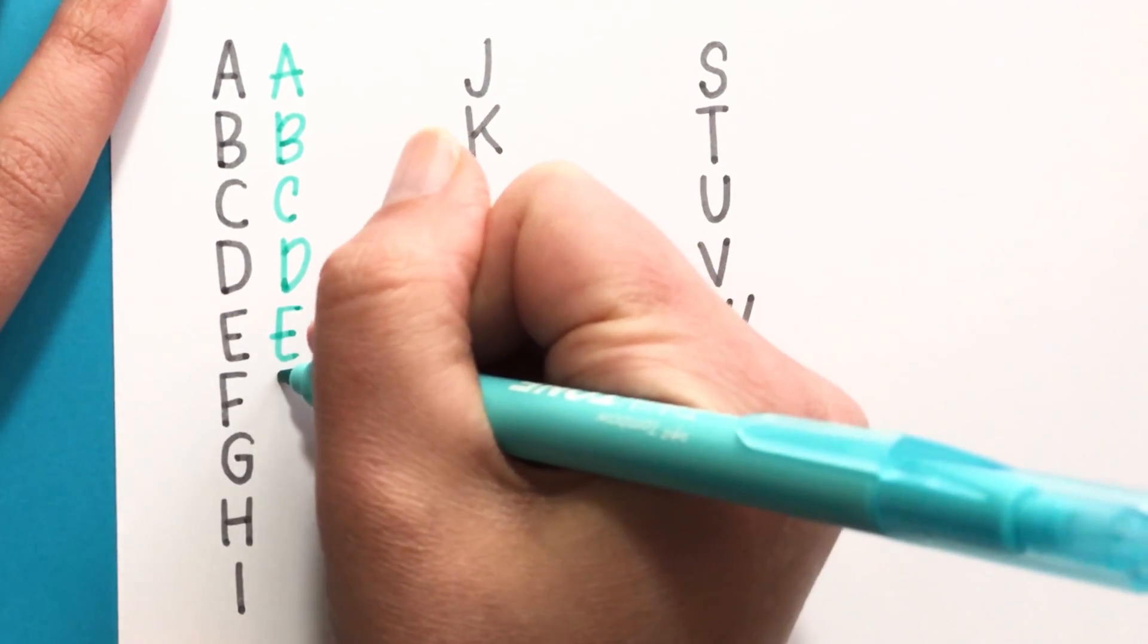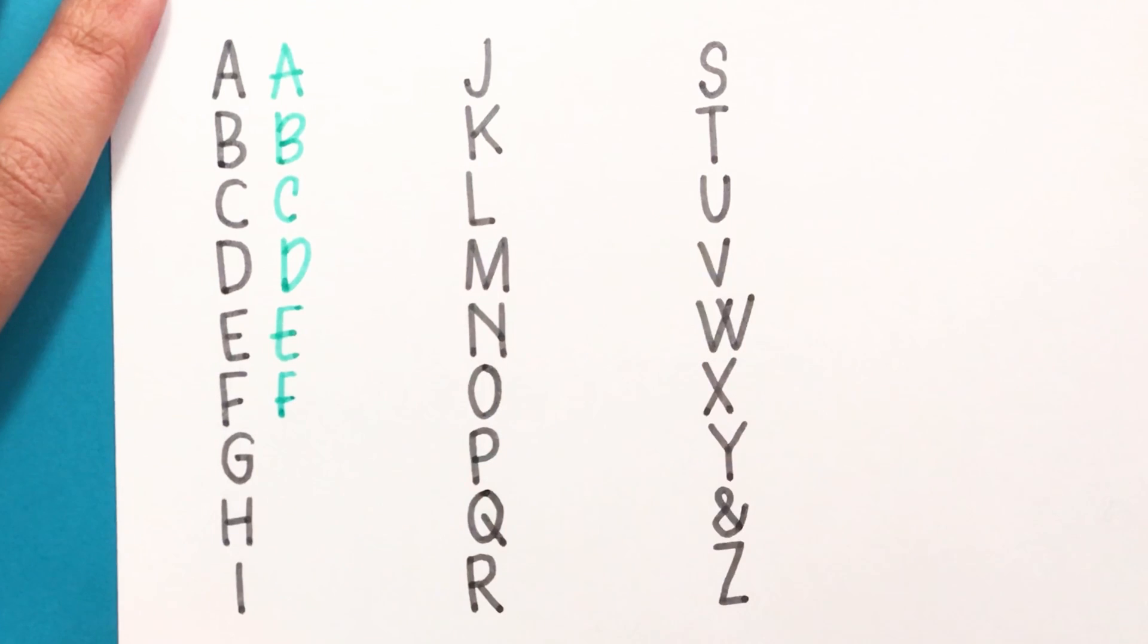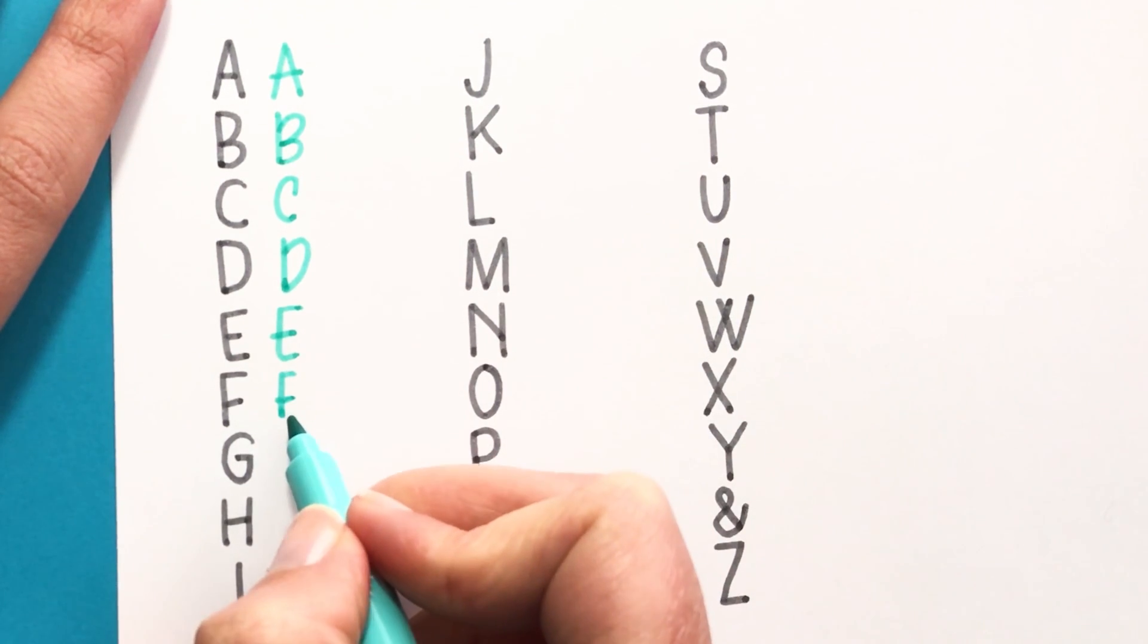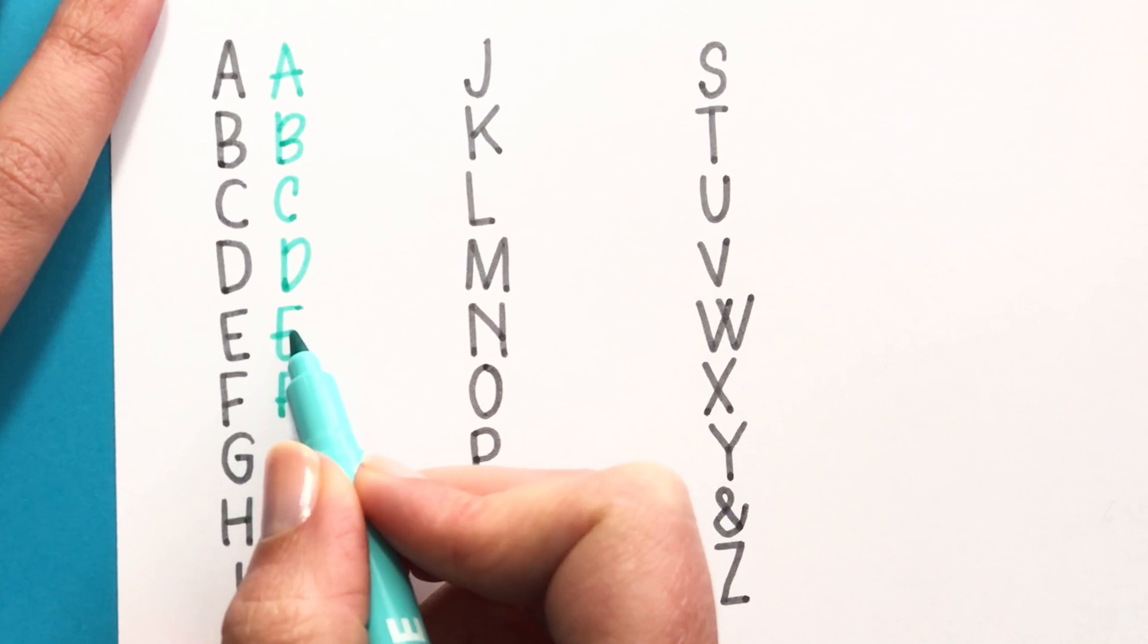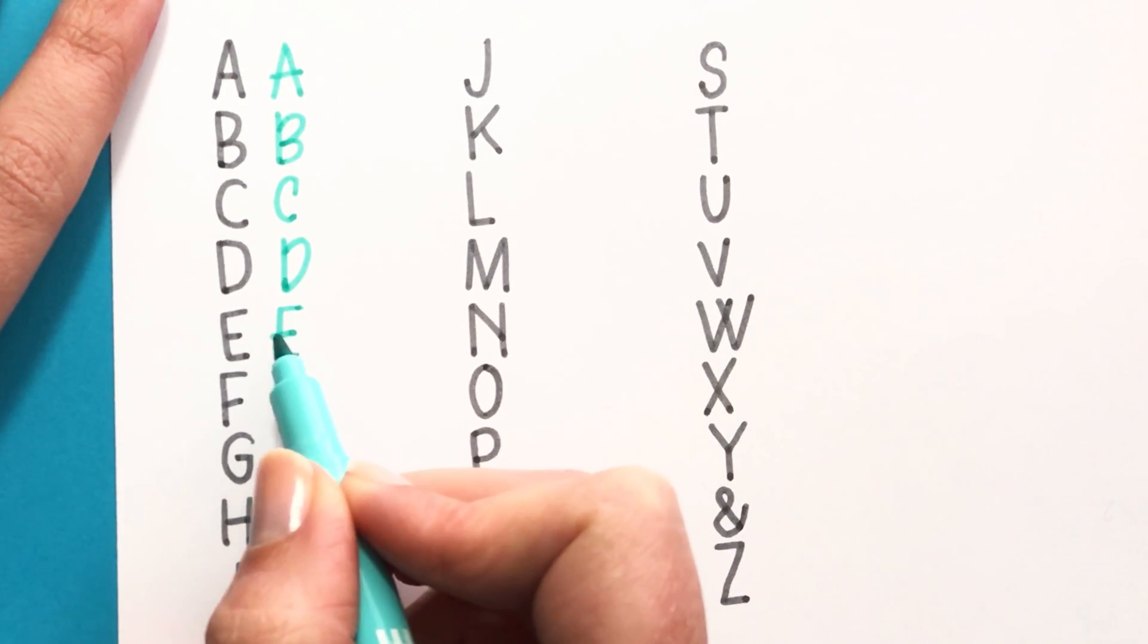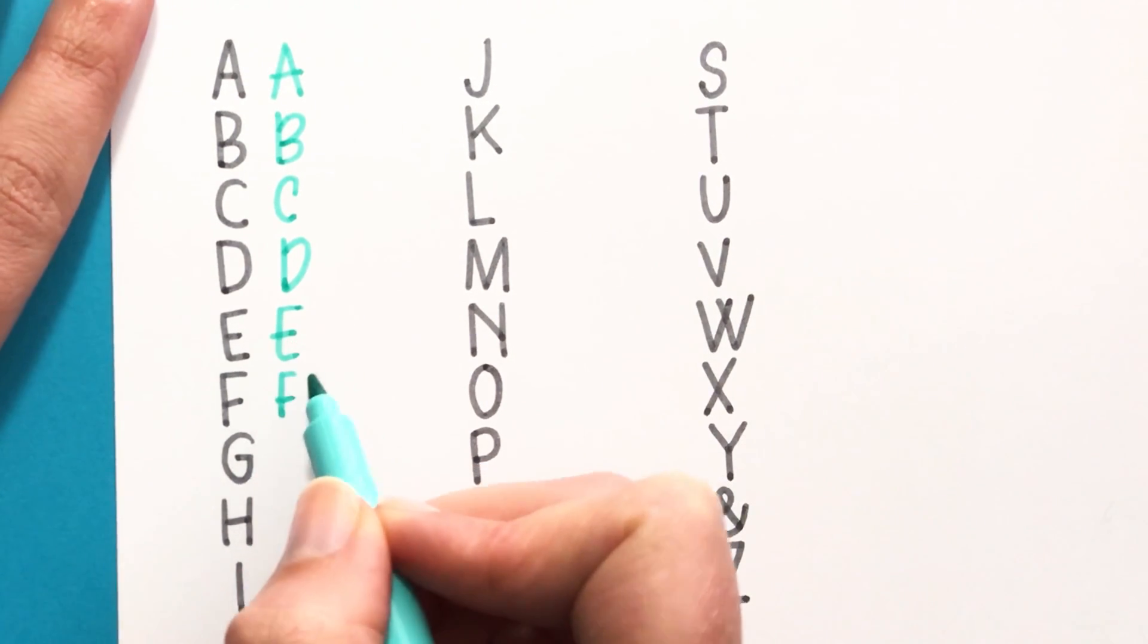All right, similar to the F, we're just going to make it a little bit quicker. Again, I'm crossing a little bit lower here like on the F and the E—I probably should have crossed it a little bit even lower than I did just to be consistent.